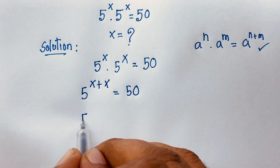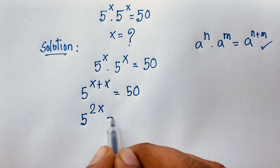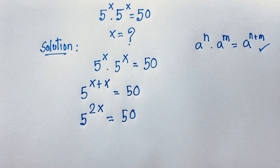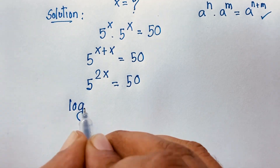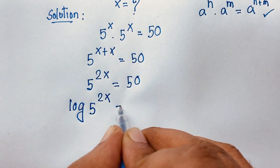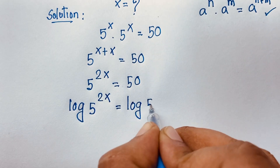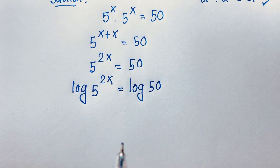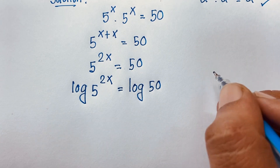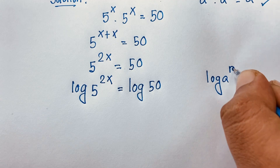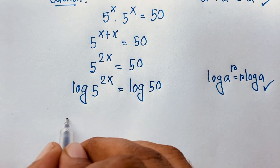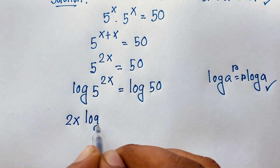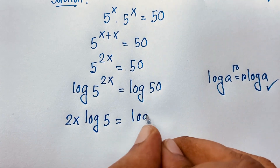Here, 5 to the power x plus x gives us 5 to the power 2x is equal to 50. Now, if I want to find out the value of x in this exponential expression, I apply natural log to both sides: log of 5 to the power 2x is equal to log 50. Using the rule log(a^r) = r·log(a), I can see easily here 2x·log 5 is equal to log 50.